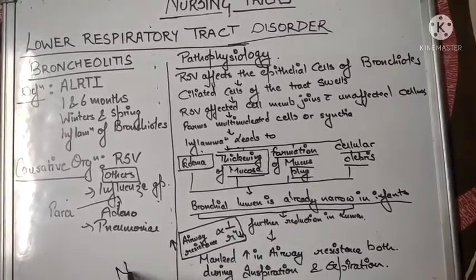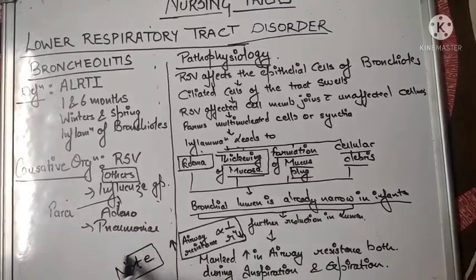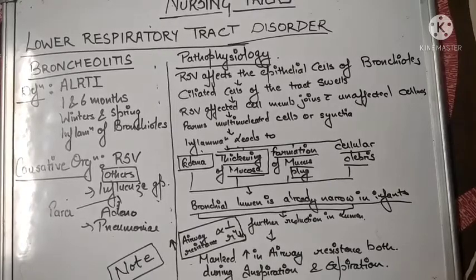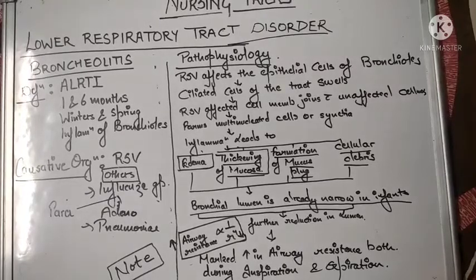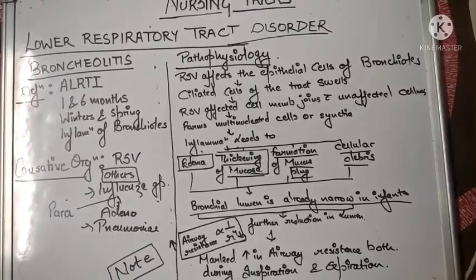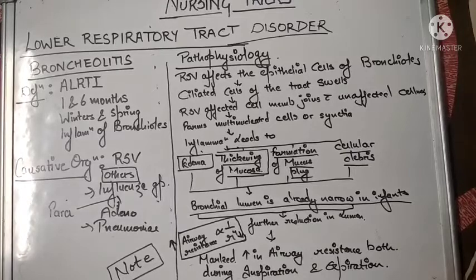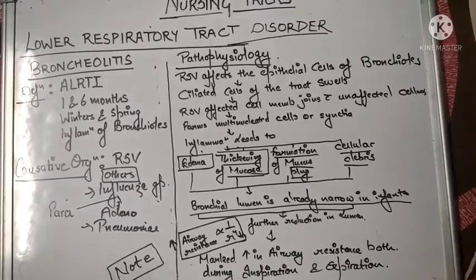An important point to note is that IgA is present in colostrum and can pass through breast milk to the infant. Because of this, there are very few chances of an infant being hospitalized with acute bronchiolitis, due to the high amount of IgA transferred in the first six months of age.